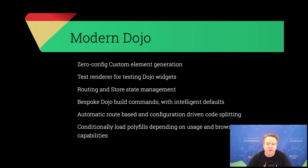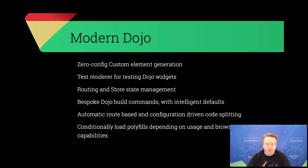We have a nice CLI build tool and a strong mantra of doing the right thing by default — you shouldn't have to make a hundred decisions before you're productive. We have code splitting that automatically works based on your routes, your configuration, or both. And we have a conditional polyfill loading system so evergreen browsers don't load much at all, while older browsers such as IE11, which we still support, will load the dependencies as needed.